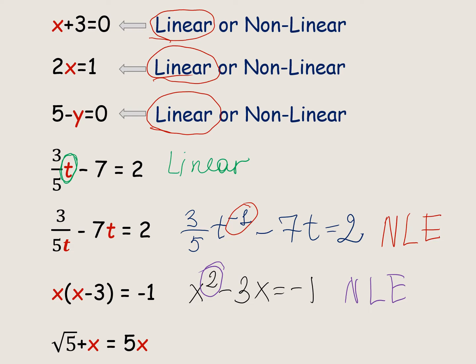Last example: the square root of x plus x equals 5x. We have variable x appearing in two terms, and the highest value of the exponent equals 1, so it is a linear equation.